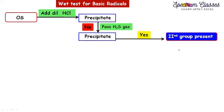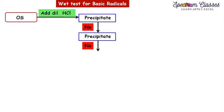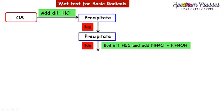If no ppt is observed, group 2 is absent and we move to group 3. To check for group 3, we first have to boil off the H₂S gas. To check whether all the H₂S gas is boiled off, use lead acetate dipped filter paper. After boiling off the H₂S gas completely, add ammonium chloride first and then ammonium hydroxide solution. This is how the group 3 group reagents are added.